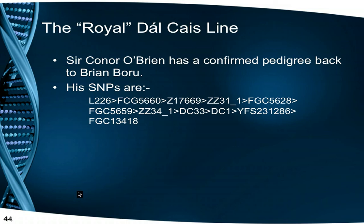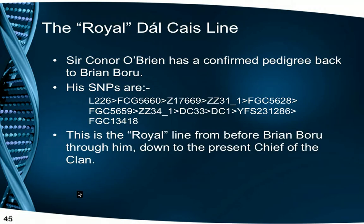Sir Conor O'Brien, who is 32nd in descent from Brian Boru, represents a confirmed pedigree back to the origins of L226. His line of SNPs from L226 comprise those that we see there. So this, we could say, is the Royal or Senior line leading from Brian Boru, born in 941, down to the present Chief of the Clan, born a thousand years later.